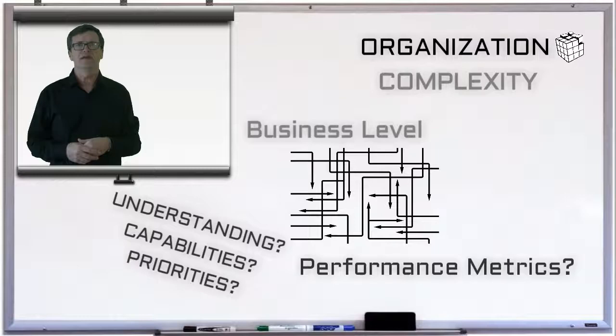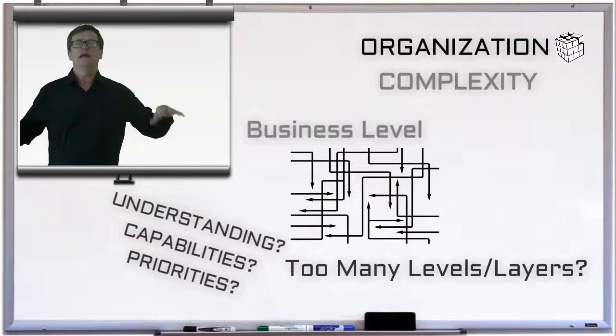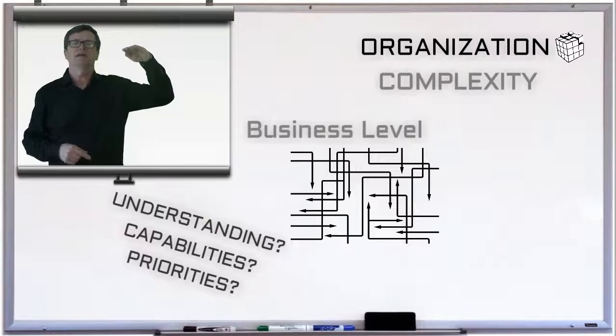And bad complexity frequently occurs because too many organizational levels or layers have been created. And we all know how too many layers of anything can be bad for an organization. So those were some of the primary reasons that bad complexity can creep into the business level of an organization.